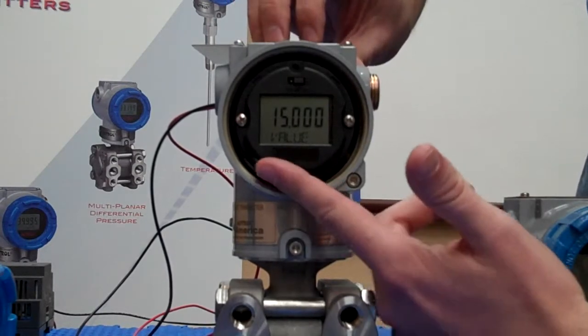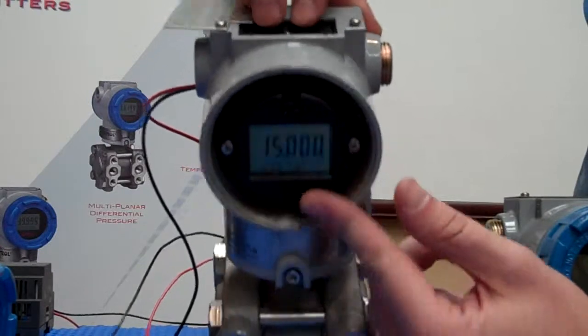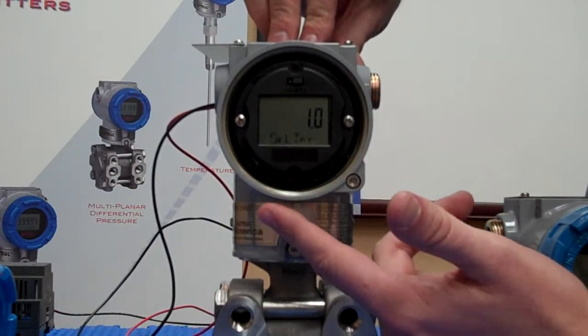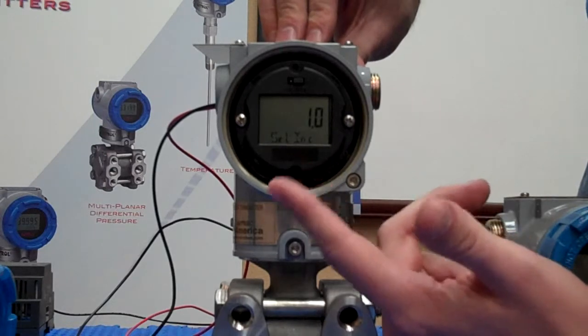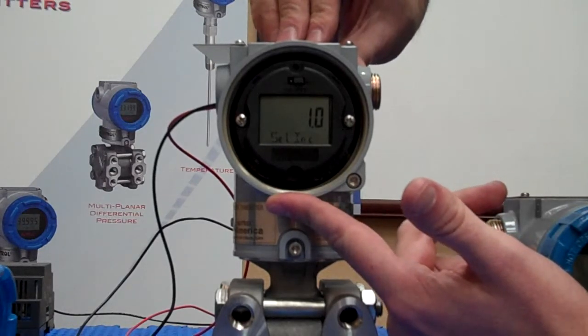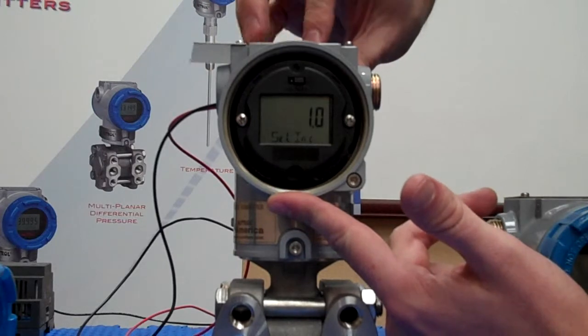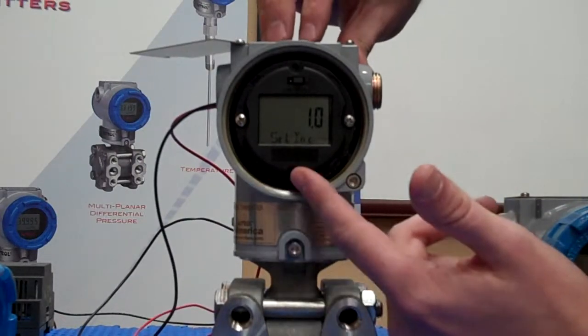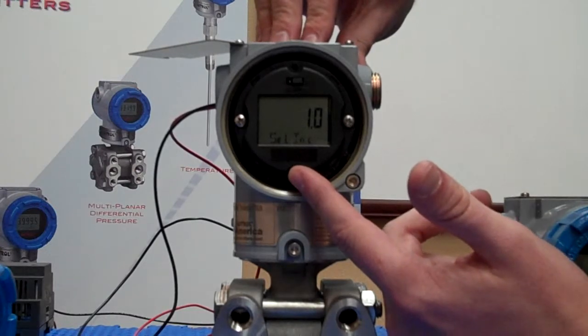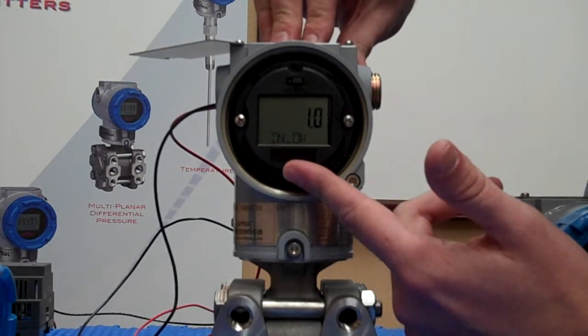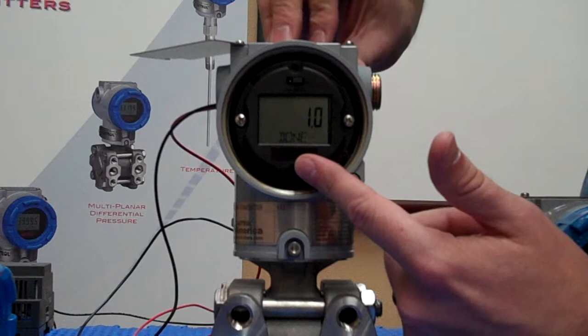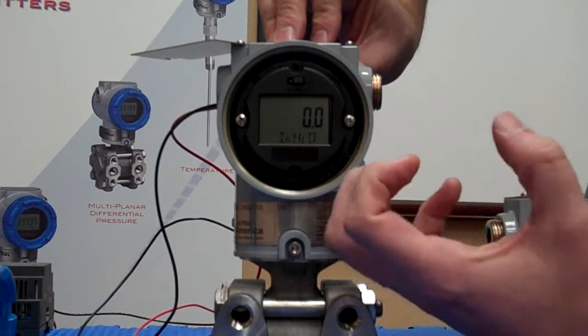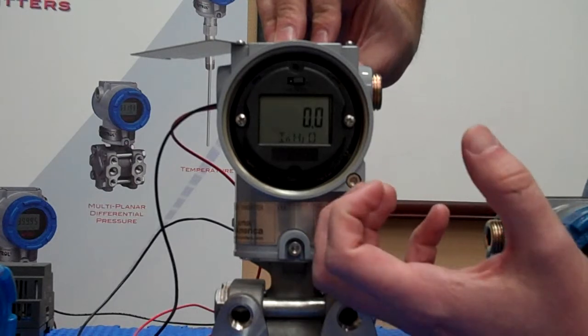Now, when you're happy with your value here, you push and hold both, and we're going to return to set increments again. At this point, it has not saved the changes that we've manipulated using the push button interface. The final save is accomplished by pushing and holding both from the set increments. If you do it here, you'll see OK and then done. That's going to let you know that the value that was shown in that screen has been saved.